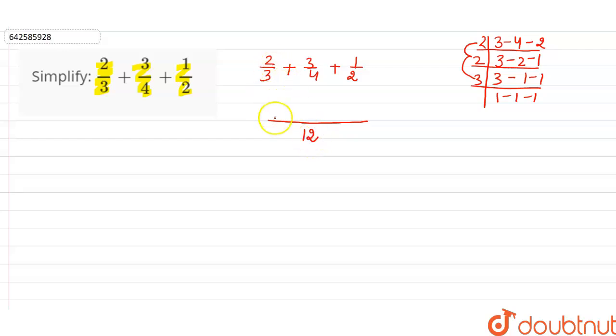Now, 3 into 4 is 12, so we have to multiply the numerator by 4. So 4 into 2 is 8. Then 4 into 3 is 12, and 3 into 3 is 9. Plus 2 into 6 is 12, 6 into 1 is 6.